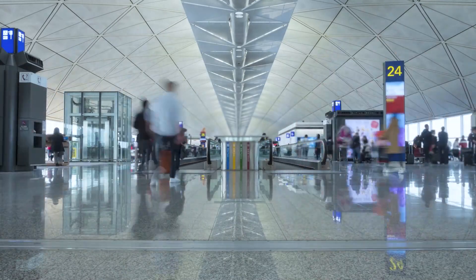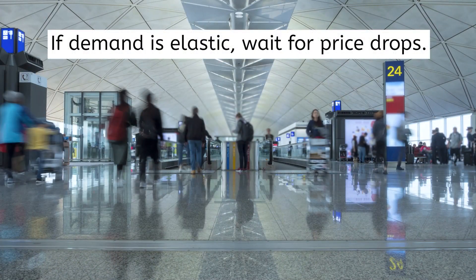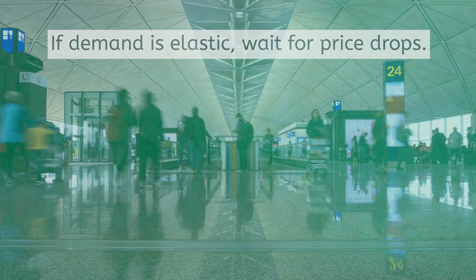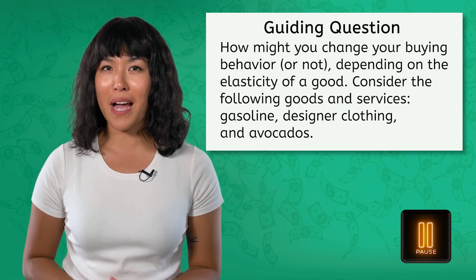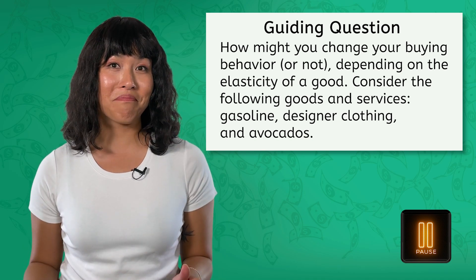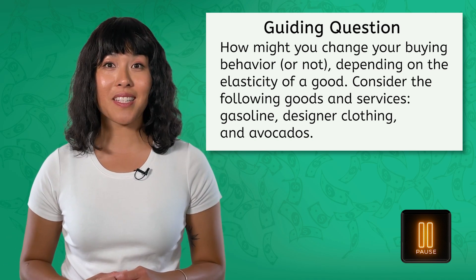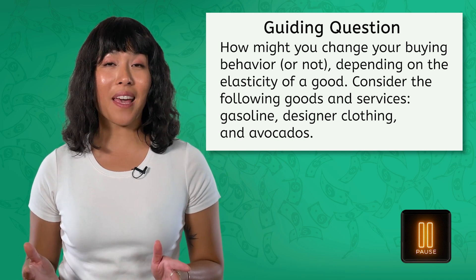What about consumers — you and me? Understanding price elasticity can help us predict changes in the cost of goods and services. For example, if a consumer knows that demand for air travel is elastic, they could guess that airlines will offer discounted prices during off-peak seasons when demand is lower. They can plan their travel or large purchases accordingly to take advantage of these price drops. Take a few minutes to think of how you might change your buying behavior depending on the elasticity of a good. Consider the following goods and services: gasoline, designer clothing, and avocados.